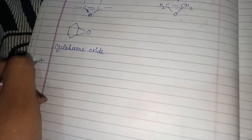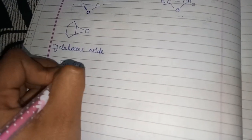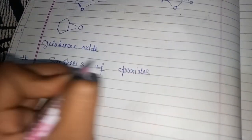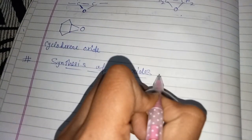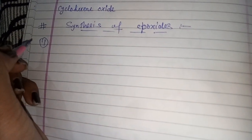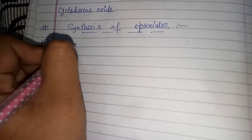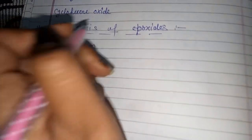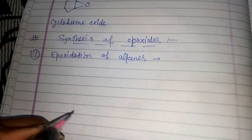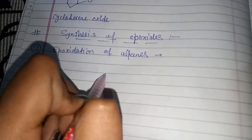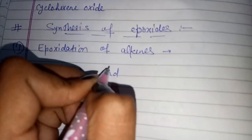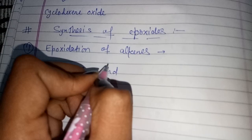Now we move to the synthesis of epoxides. The first reaction is epoxidation of alkenes. Epoxides are usually prepared by the reaction between an alkene and an organic peroxy acid.